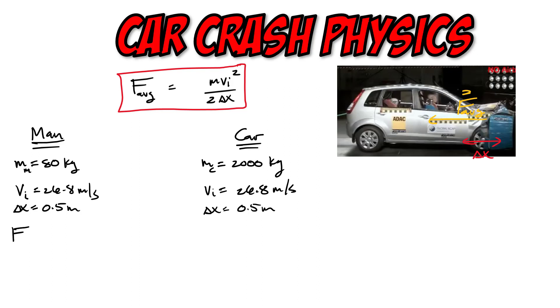The average force on the man: I would do 80 times 26.8 squared, then 2 times 0.5. You calculate that average force on the man and I get approximately 57,460 newtons. Pretty big. How about on the car? Just substituting the masses, the only difference here is 2,000. When I substitute the numbers, I get a giant number: 1,436,480 newtons. Wow.